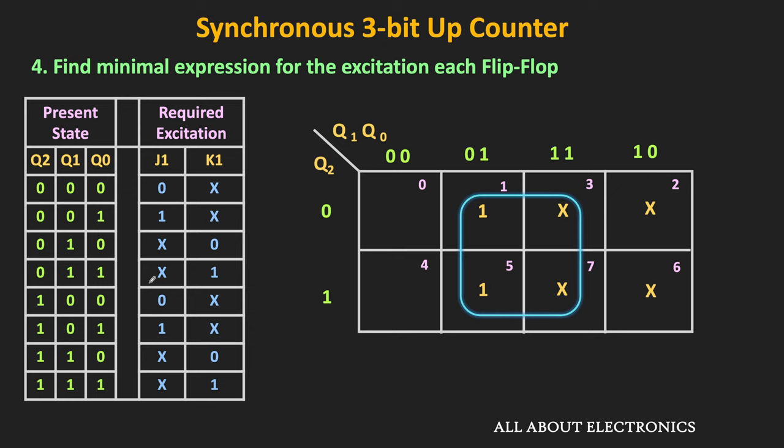We now have the minimal expressions for each flip-flop. Based on these, we can draw the logic circuit. For the first flip-flop at the LSB position, both J0 and K0 are connected to logic 1. Since J1 = K1 = Q0, the Q0 output is directly connected to the J1 and K1 inputs. Since J2 = K2 = Q1·Q0, both Q1 and Q0 outputs are connected to an AND gate, whose output feeds the J2 and K2 inputs. This gives us the synchronous 3-bit up counter.